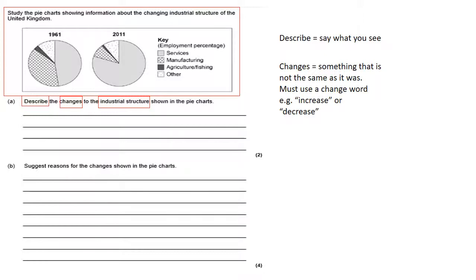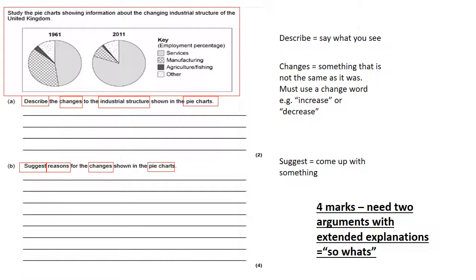All right, question B. Let's have a little look at what we've got to do here. Suggest, which means you've got to come up with something. Reasons, it's a plural. You have to give two reasons here. If you give one, the maximum number of marks you'll get is two. Changes, defined earlier, something that is not the same anymore. And again, shown in the pie charts. Now, this is a four mark question, so it comes with its own little bit of exam advice. You need two arguments with extended explanations, aka the so what rule.